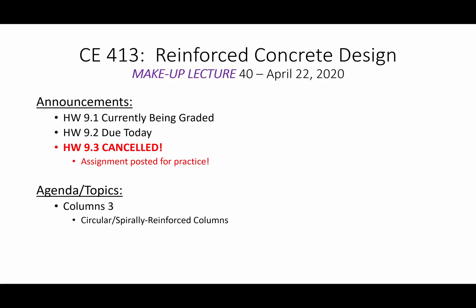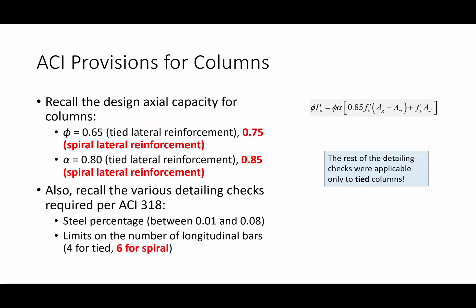Let's get right into our topic today, which is circular and spirally reinforced columns. Let's recall the capacity equation for columns — it's still the same equation: phi times alpha times the term in brackets, 0.85 FC prime times the area of concrete, plus FY times the area of steel. Nothing really changes there. The only thing that changes from a capacity standpoint is our phi and alpha values, because we're dealing with a different animal, and that will become clear here in a second.